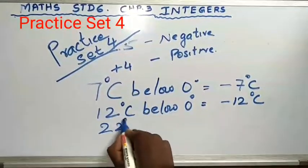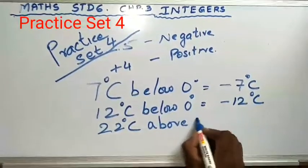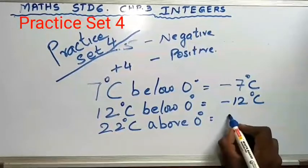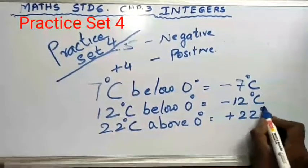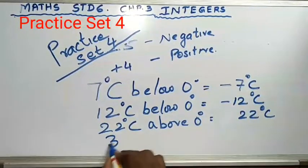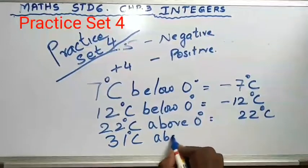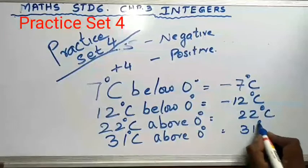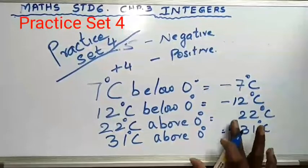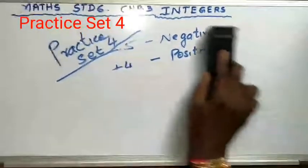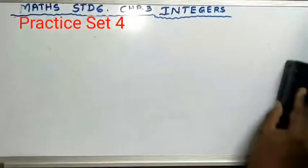Next, 22 degrees Celsius above 0. Now 'above' means plus sign, so it is plus 22 degrees Celsius, but we do not write the plus sign. Then 31 degrees above 0 — it is 31 degrees Celsius, that is plus 31 degrees Celsius, but no need to write the plus sign.